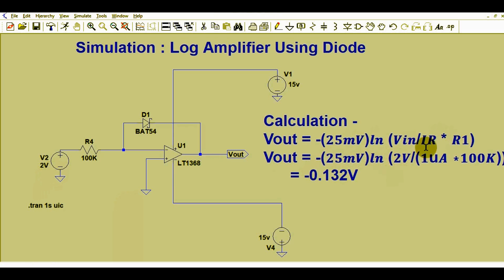IR is the reverse leakage current of this diode D1. For BAT54, if you look at the datasheet, you can find the reverse leakage current IR for this diode is 1 microampere. So I put here 1 microampere times 100k. If you solve this, you will get minus 0.132 volts.